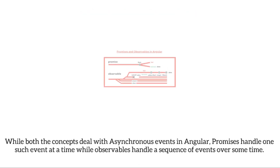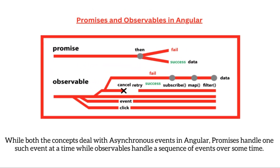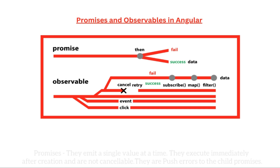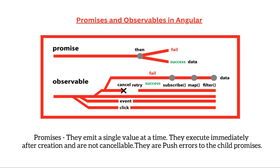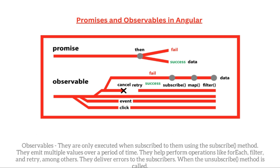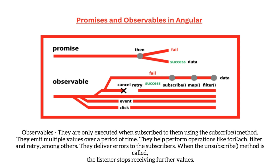While both concepts deal with asynchronous events in Angular, Promises handle one event at a time while Observables handle a sequence of events over time. Promises emit a single value, execute immediately after creation, and are not cancelable; they push errors to child promises. Observables are only executed when subscribed to using the subscribe() method, emit multiple values over time, support operations like forEach, filter, and retry, deliver errors to subscribers, and stop when the unsubscribe() method is called.